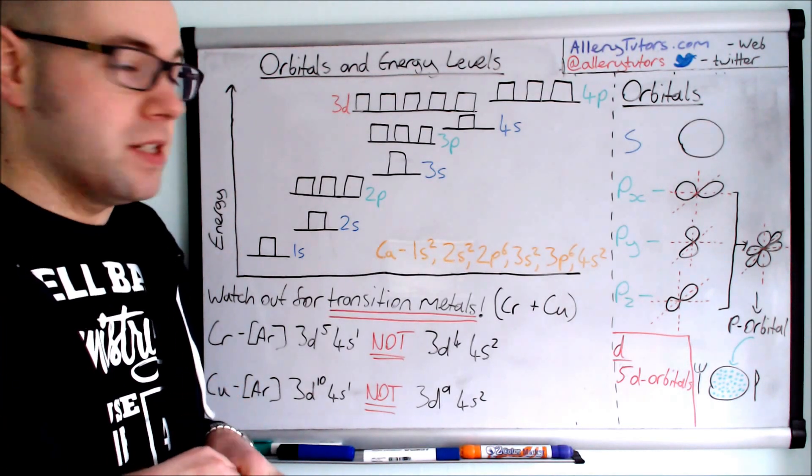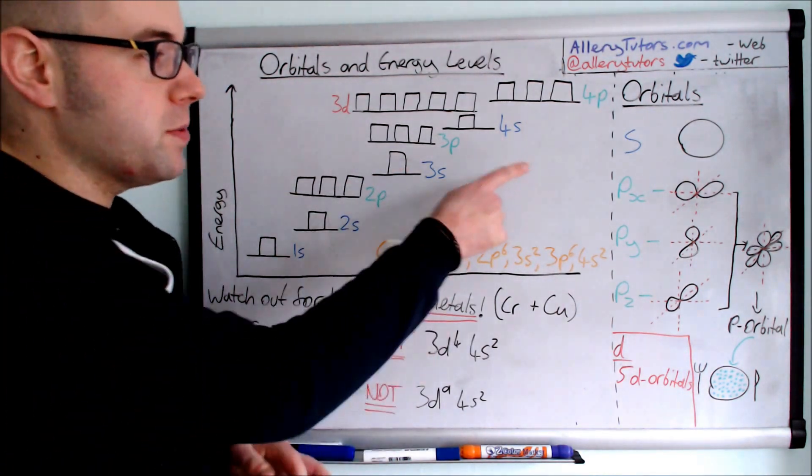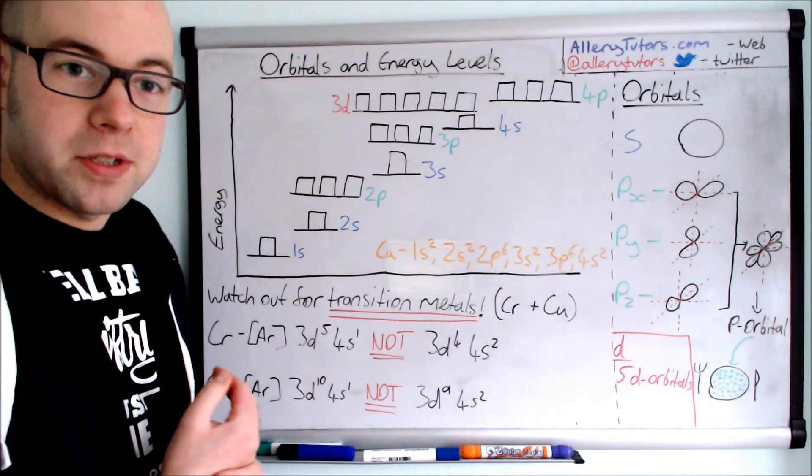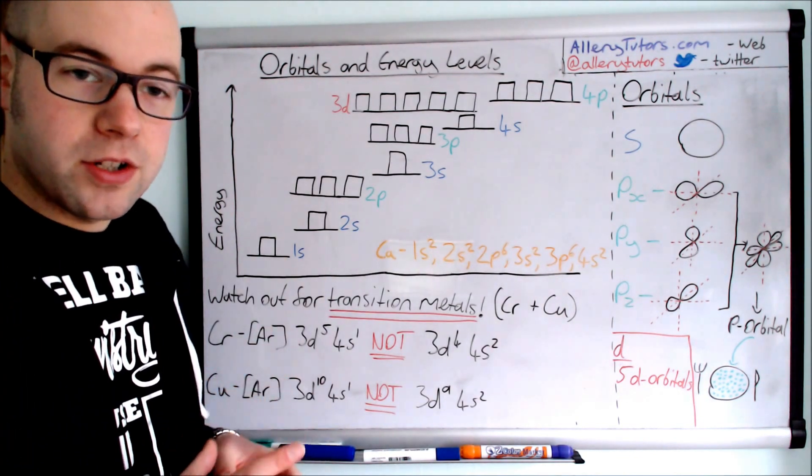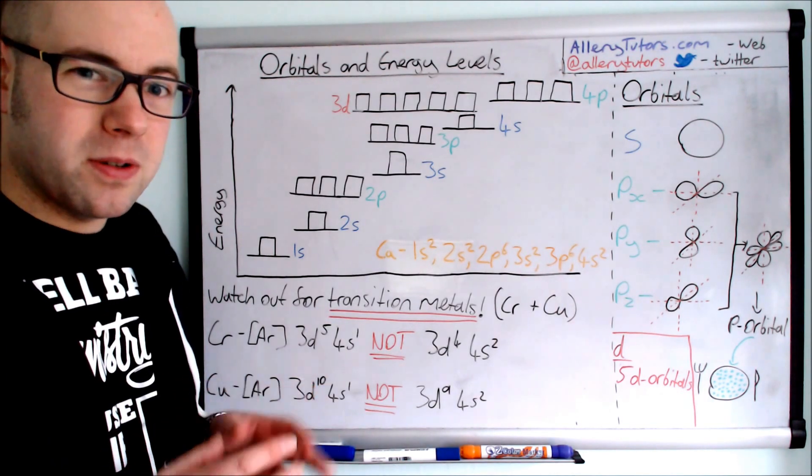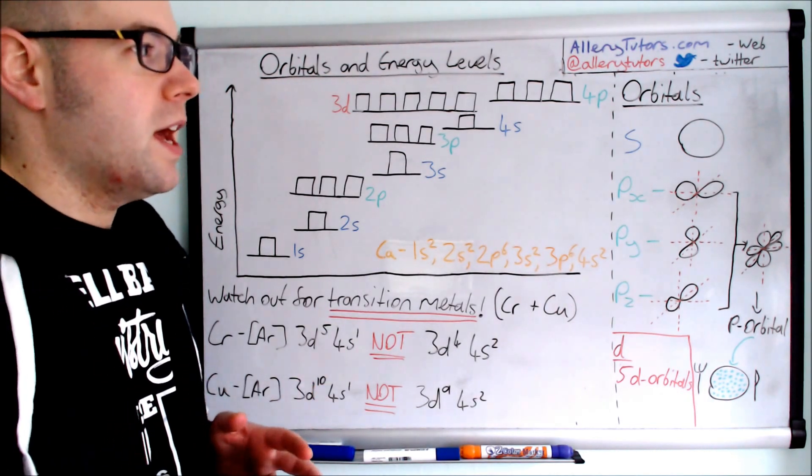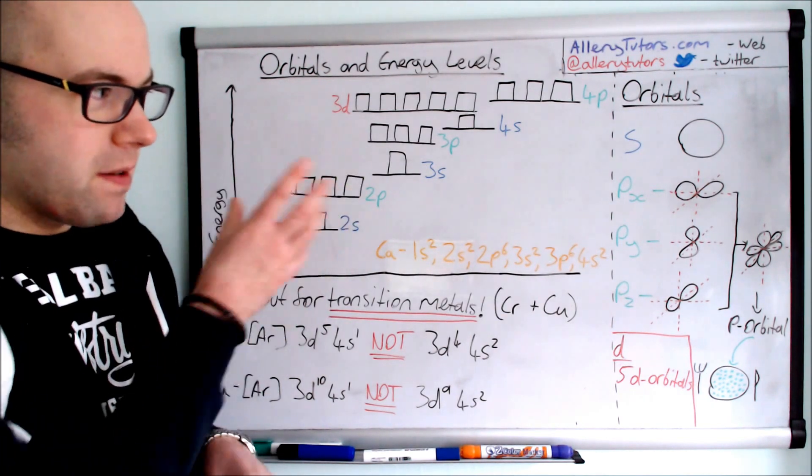So we're going to start by looking at the different orbitals. As you can see on the right hand side, we have s orbitals, p orbitals, and d orbitals. The s orbital is spherical in shape and it can hold two electrons maximum. The orbital basically shows us where the path of an electron will be, so they would orbit in a spherical shape.